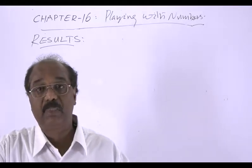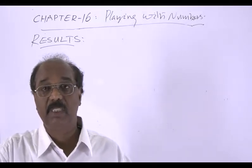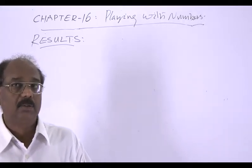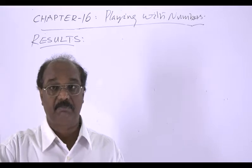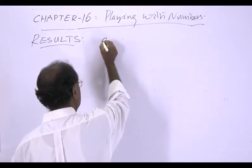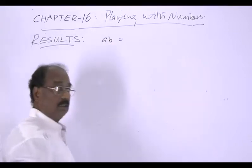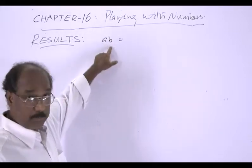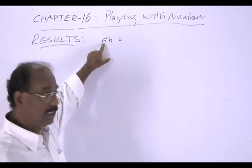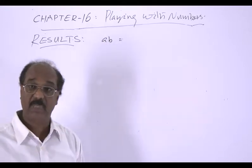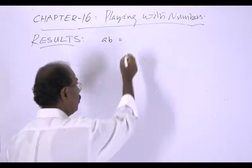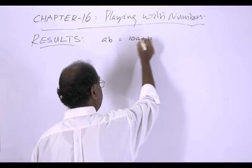Now we will discuss certain results which will be helpful in doing problems. First consider a two-digit number. Generally a two-digit number can be written as AB — this is not the product but two digits — A in the tenth place and B in the unit place. Therefore we can write AB in the form 10A plus B.